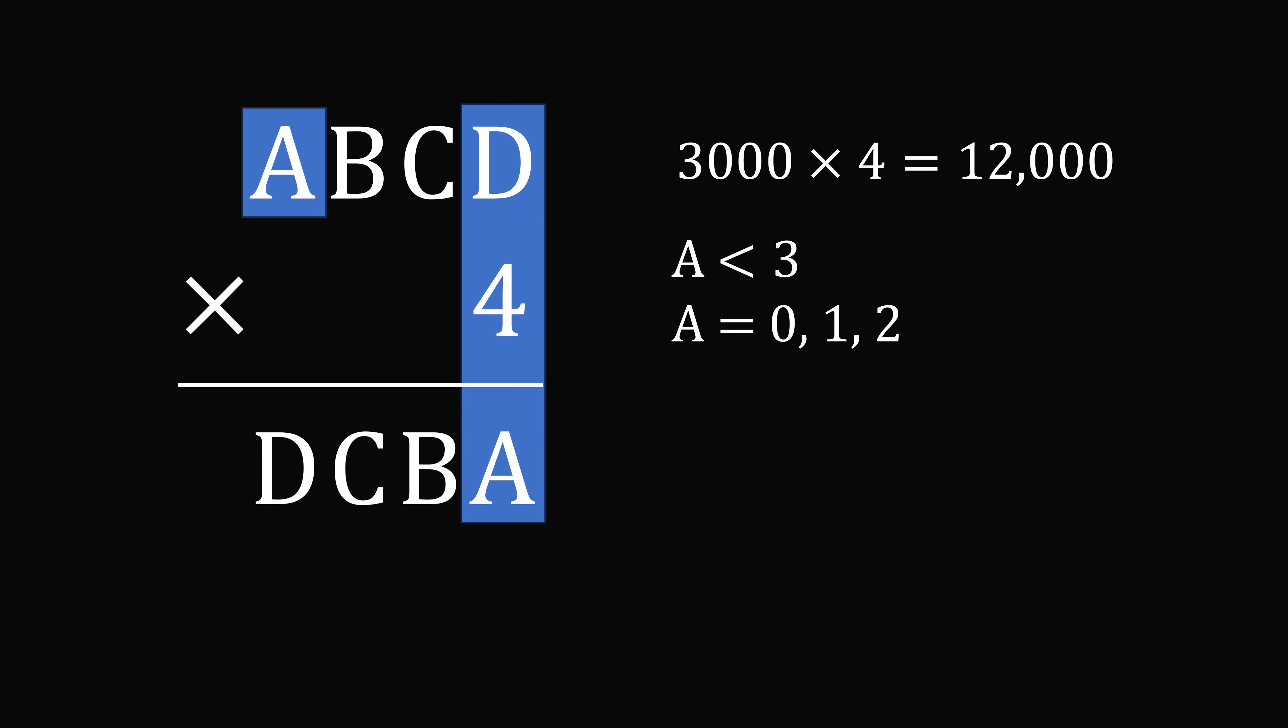Then we have D times 4 is equal to A. So we have a number times 4 is equal to A, which means that A is an even number. So we know that A is equal to 0 or 2.